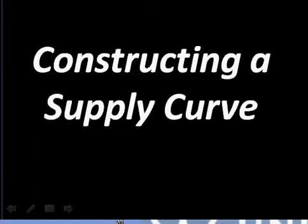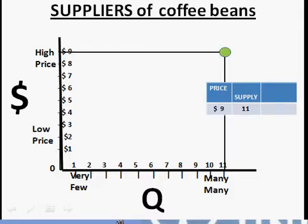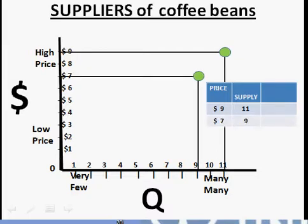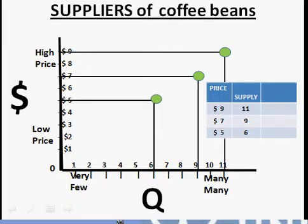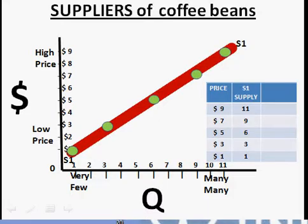Now we're going to look at constructing a supply curve. Similar to what we did for our demand curve, we start with a set of data. At nine dollars a pound, suppliers are willing to supply eleven million pounds; at seven dollars, nine million pounds; at five dollars, six million pounds; at three dollars, three million pounds; and at one dollar, only one million pounds. We can connect those points with our curve.